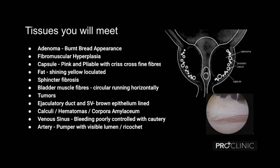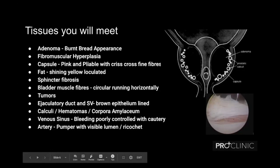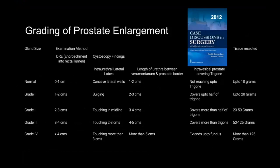We also have arteries which can be pumpers, or there may be ricochet bleeding. This is a grading of prostate enlargement from one of the books written in surgery. Basically there is a way to gauge how much time it is going to take by measuring the length of the prostatic urethra, seeing how much the intravesical portion is bulging into the bladder, and making a rough estimate from that. This is from Barnes' original paper with slight modifications.